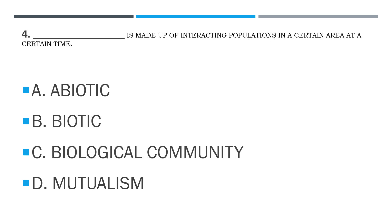Number 4. Blank is made up of interacting populations in a certain area at a certain time. A. Abiotic. B. Biotic. C. Biological Community. D. Mutualism.